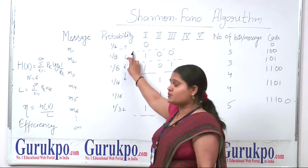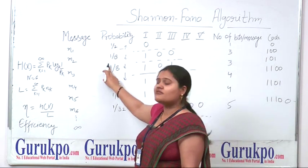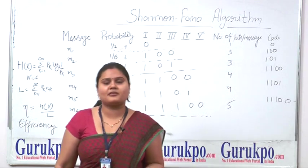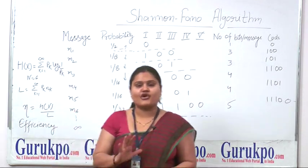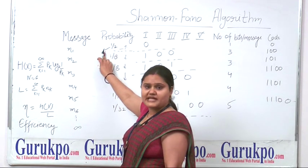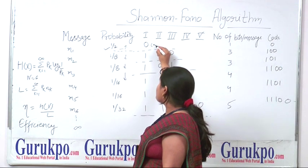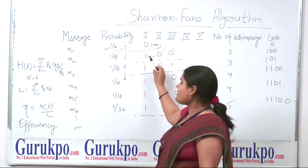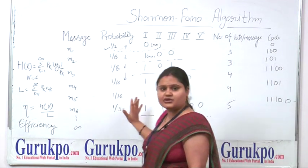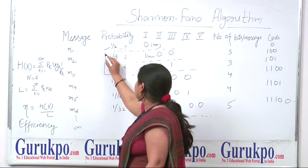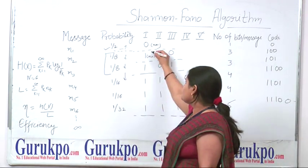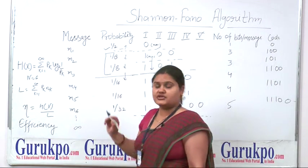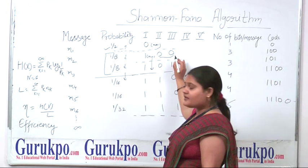We see that 1/2 is not equiprobable with 1/8, so we keep 1/2 in a separate portion. We assign 0 to the highest probability group and 1 to the lowest probability group. So 1/2 gets 0 as the maximum portion, and the remaining group gets 1 as the minimum portion. Next, 1/8 and 1/8 are equiprobable, so we assign 1 for the minimum — since 0 is for maximum and 1 is for minimum. Here 1/8 forms a complete portion.